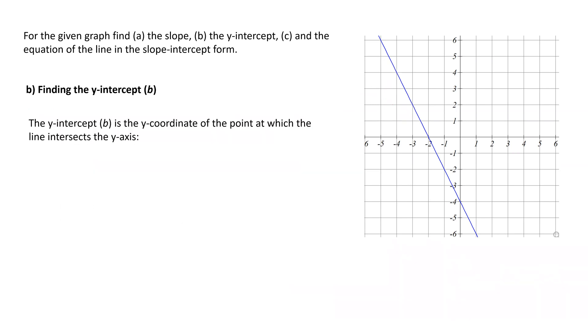Moving on to part B, the y-intercept, which is represented by b, is the y-coordinate of the point at which the line intersects with the y-axis, that is point C. Since the point is on the y-axis, its x-coordinate is 0 and its y-coordinate is negative 4. The y-coordinate of C, negative 4, will be the y-intercept or b.